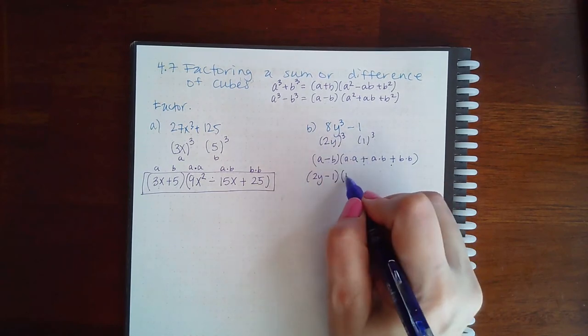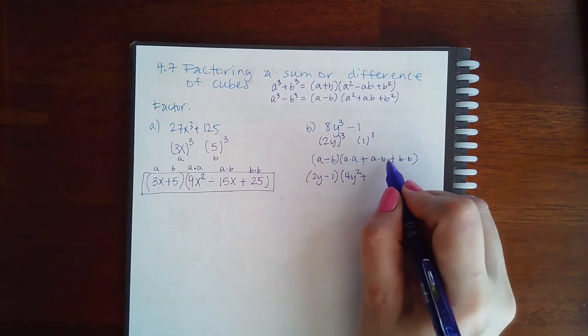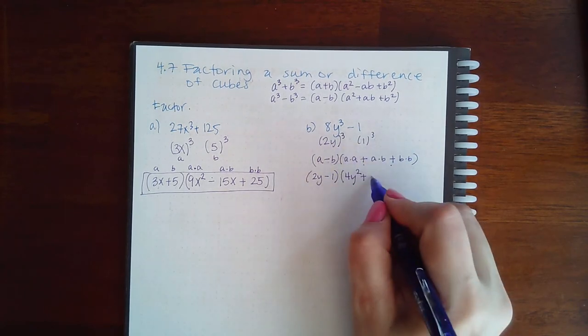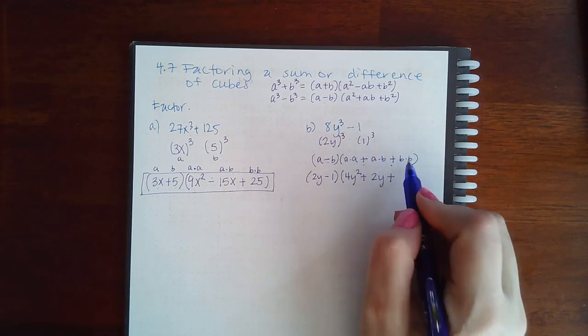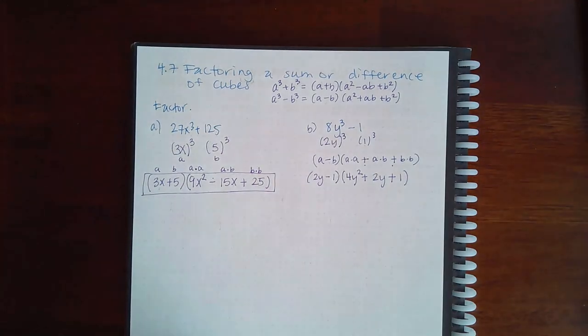A times a, 2y times 2y is 4y squared, plus a times b, 2y times 1 is just 2y, plus b times b, which is 1 times 1, which ends up being just 1.